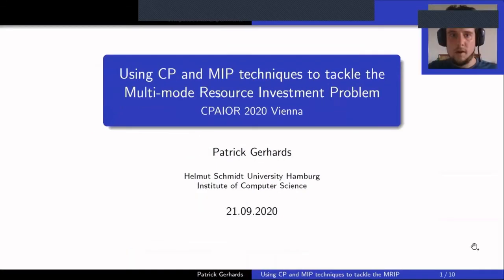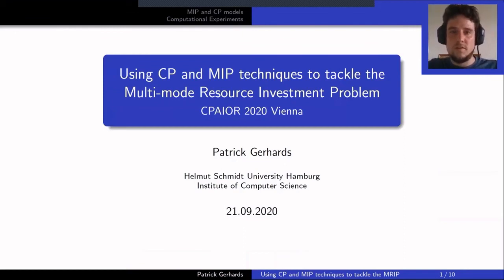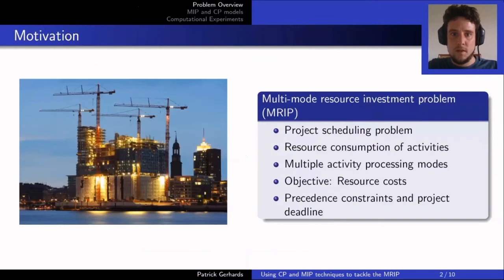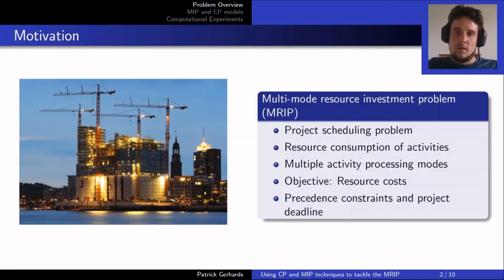Welcome everybody, my name is Patrick Geertz, working at Helmut Schmidt University in Hamburg. I'll talk about the multimode resource investment problem solved using CP and IP techniques. This is a project scheduling problem: we have activities that need resources, and for each activity multiple modes — a fast mode using many resources or a slow mode using fewer. We distinguish two types of resources: renewable resources like cranes or workers, replenished each time period, and non-renewable resources like raw materials or budget.